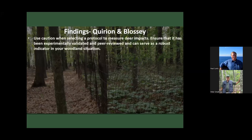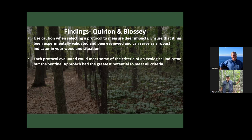Just to summarize findings from Quirin and Blossy's work — hopefully they'll publish this fall. You need to use caution in selecting a protocol to measure deer impact; make sure it's been experimentally validated, peer reviewed, and is as robust an indicator as expected in your woodland situation. Each of the four protocols can meet some criteria of ecological indicators. But the Sentinel approach had the greatest potential to meet them all. If you've got accessibility to the seedlings or herbs that you can plant out, the Sentinel approach has a lot of merit, though the drawback is production of larger numbers of seedlings.